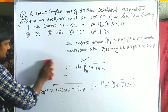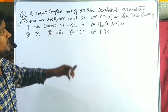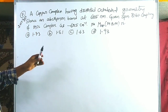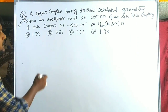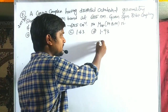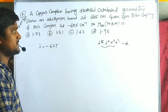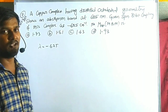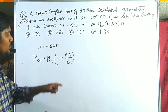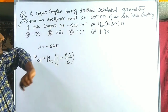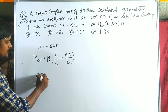Problem 7: a copper²⁺ complex with distorted octahedral geometry shows an absorption band at 625 nm. The spin-orbit coupling constant λ = -625 cm⁻¹ (negative for d⁹). We need to find μeff. The formula is μeff = μspin × (1 - αλ/Δ). We know λ = -625 cm⁻¹. The absorption wavelength 625 nm must be converted to Δ in cm⁻¹: since wavelength is inversely proportional to energy, Δ = 1/λ in wavenumbers.